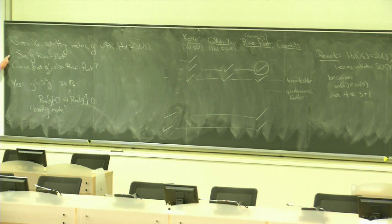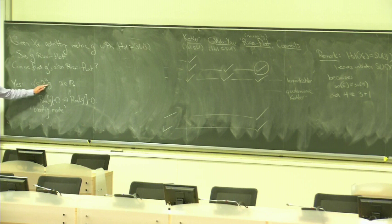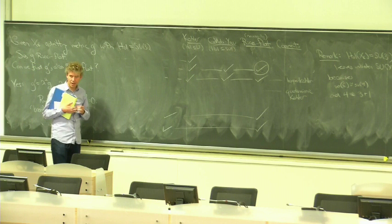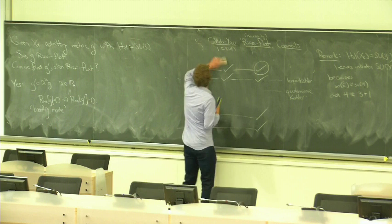So suppose you're given a topological manifold X_6 that admits some metric G with holonomy equals SU(3). So G is Ricci flat. Metric is vanishing Ricci tensor. So question, can we find G prime also Ricci flat? Can we find another Ricci flat metric on the same space? Well, yes. Rather trivially, if we take G prime to be lambda squared G with lambda a real number not equal to zero. Then R_{mn} of G is equal to zero implies that R_{mn} of G prime equals zero. This is what's often called the breathing mode. It's called the breathing mode because it corresponds to an overall dilatation of the space.